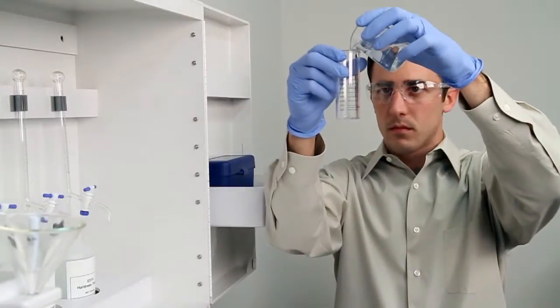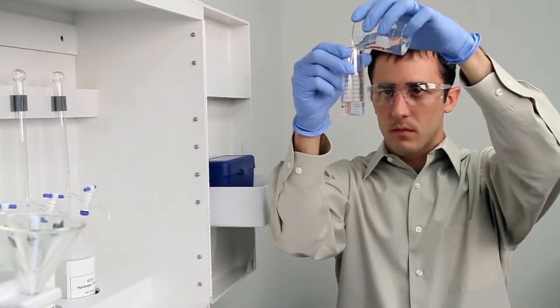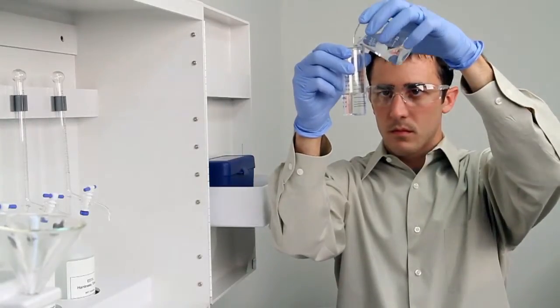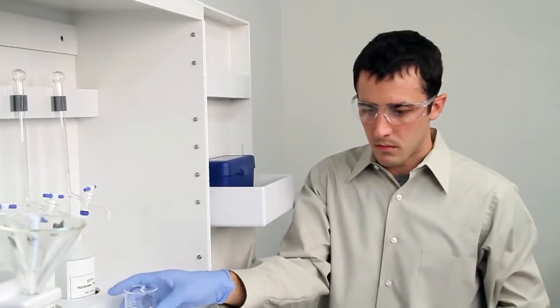To get an accurate sample, hold the vial close to eye level. Accuracy is very important during this step. Once you feel you have an accurate sample, place the vial on a level surface and bend down to eye level to verify.